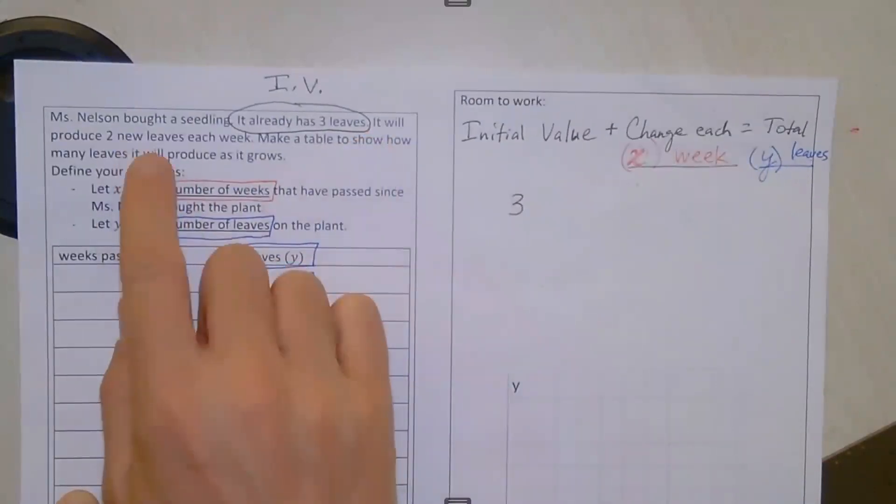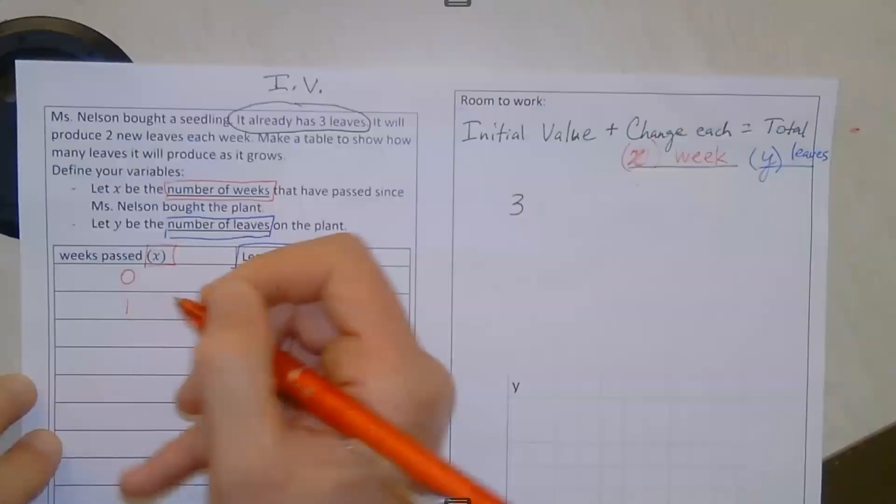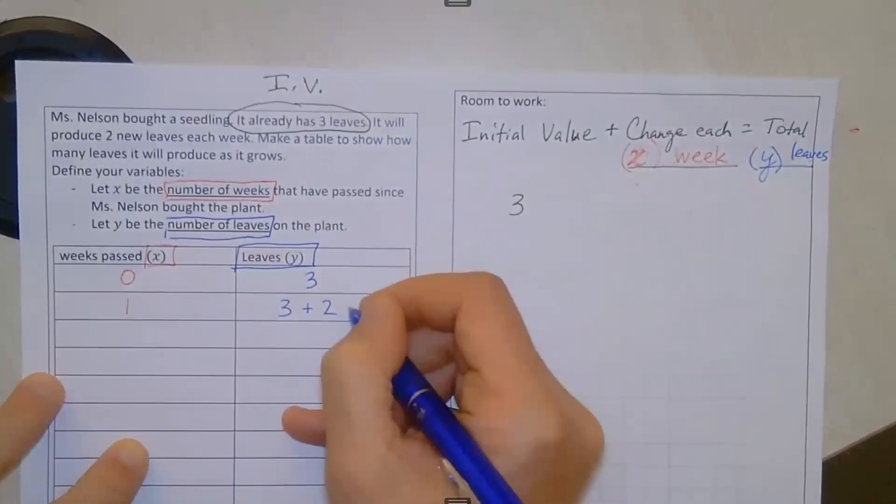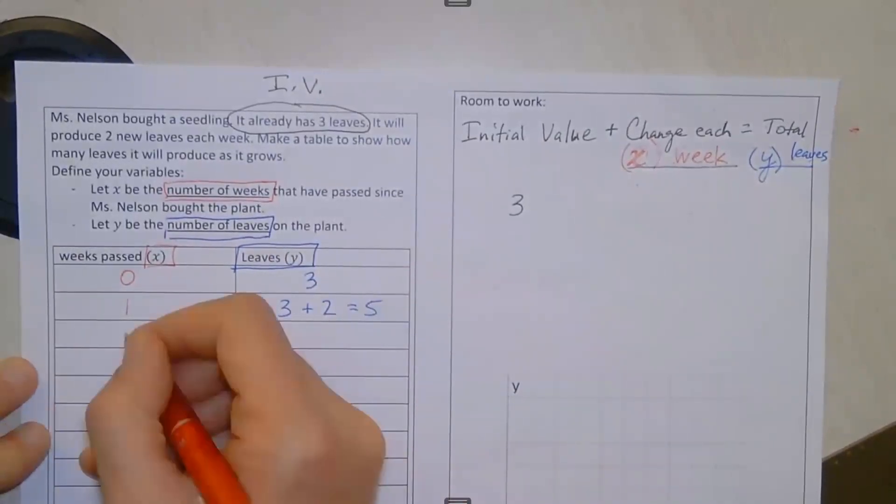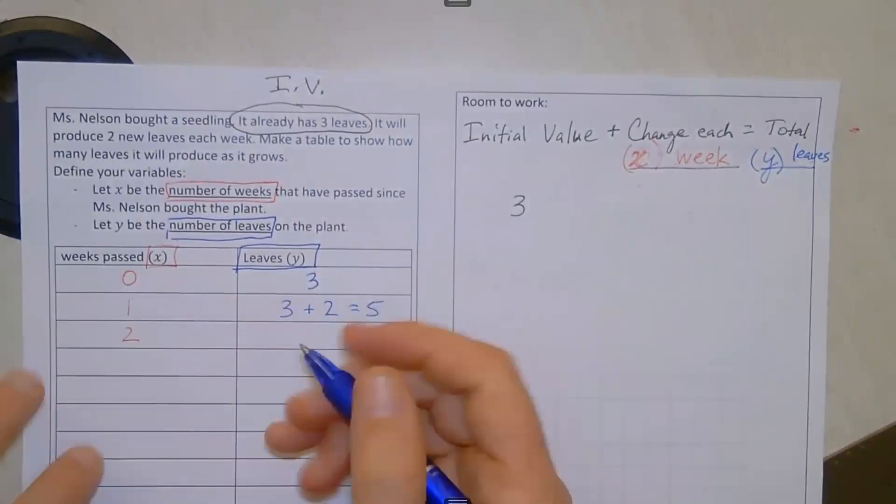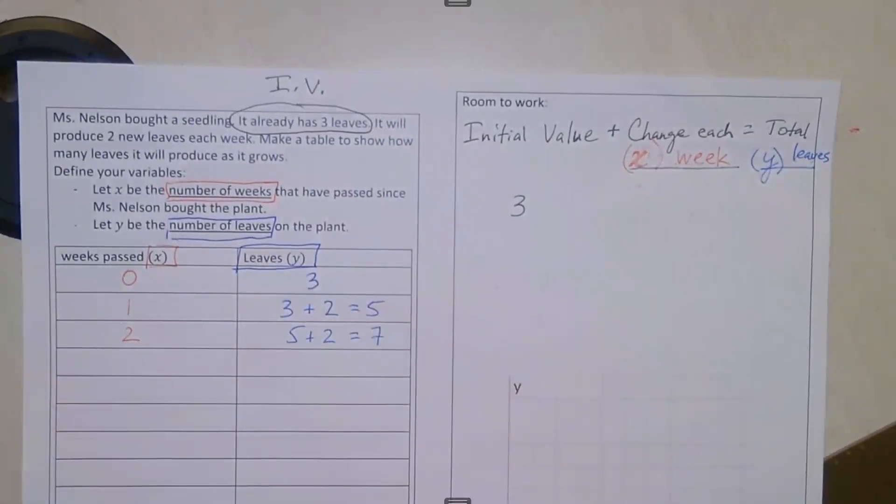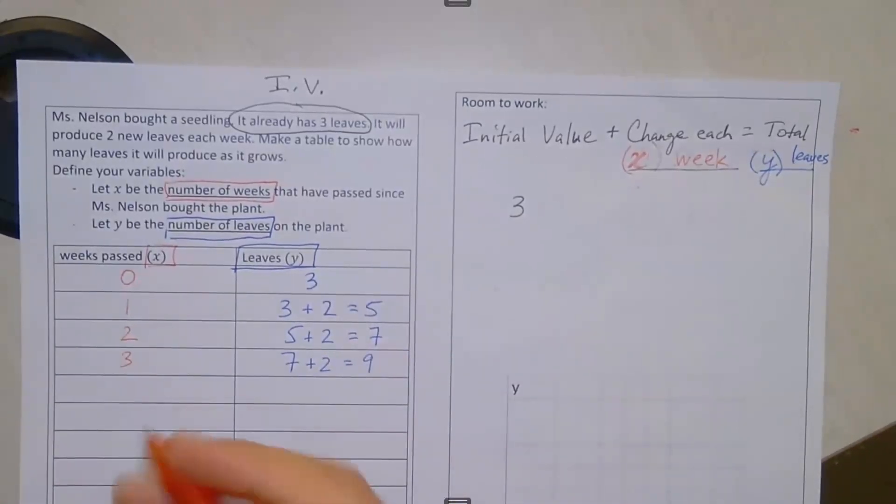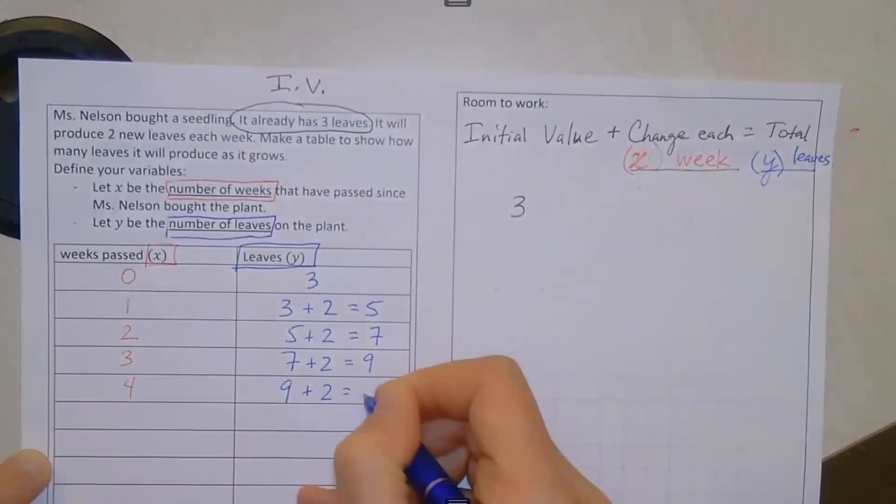It will produce two new leaves each week. So in the first week, our number of leaves is three plus two equals five. After the second week, we went into the second week already having five, and now we add two more, and that's seven. Third week, we already have seven, we add two more, we get nine. At the end of four weeks, we already had nine, and now we have eleven.